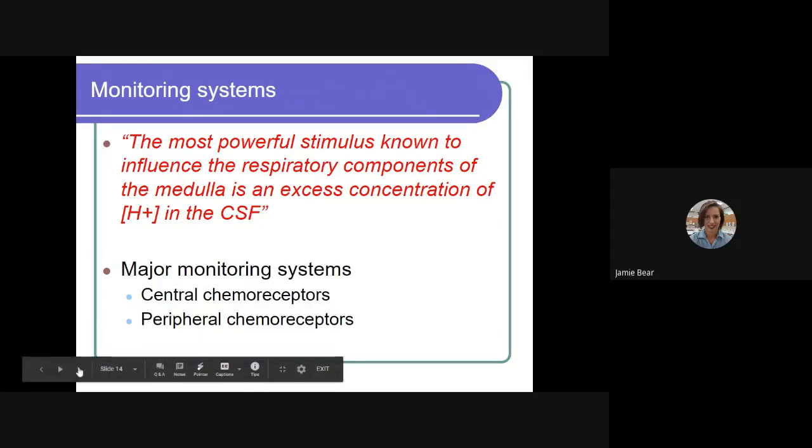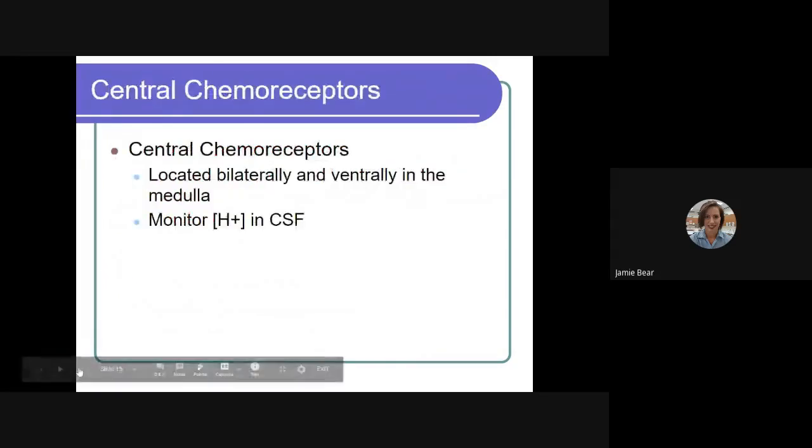The most powerful stimulus known to influence the respiratory components of the medulla is an excess concentration of hydrogen ions in the cerebral spinal fluid. The central chemoreceptors are located bilaterally and ventrally in the medulla, and they monitor hydrogen ion concentration in the cerebral spinal fluid, which is a clear colorless fluid that surrounds the brain and spinal cord. This fluid helps to maintain constant pressure in the brain, despite changes in blood pressure and transports metabolic waste products away from the brain and spinal cord back to the bloodstream.